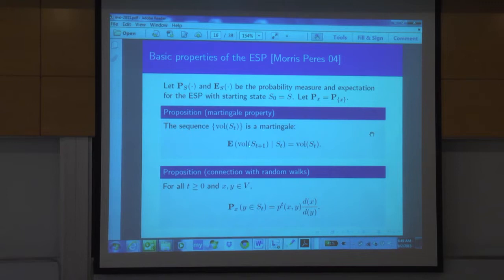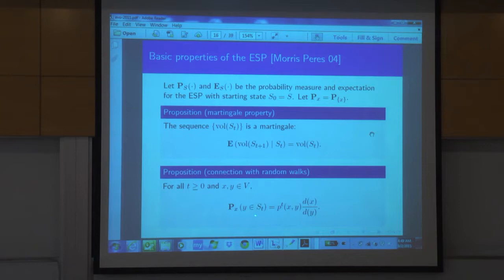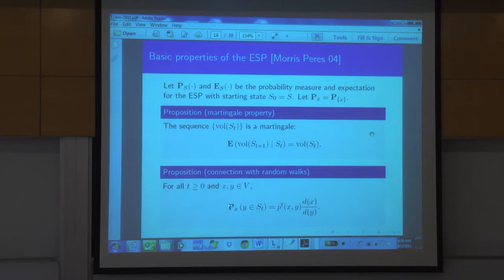The volume of S_t is a martingale: given that I know S_t now, the expected volume in one step is the same as the current volume. A closely related point is the connection to the random walk: the probability, starting at X, that Y is in the set S at time T is essentially the same as the transition probability for our lazy walk in T steps from X to Y, except for a normalization factor — this ratio of degrees.